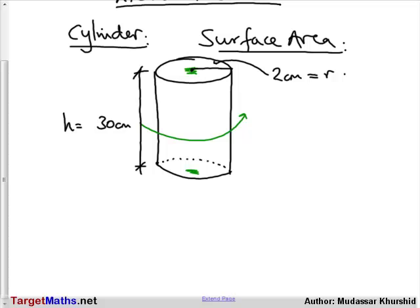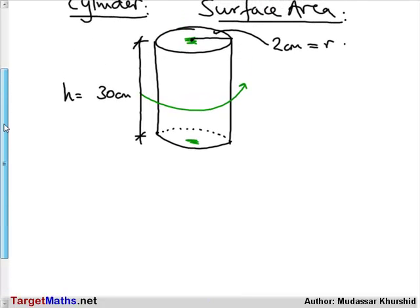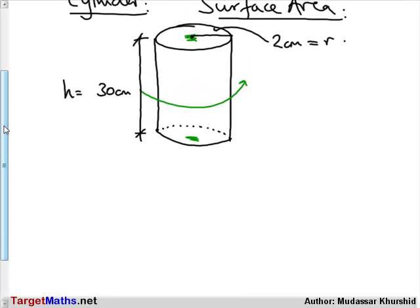Now we need to consider the surfaces on this cylinder. The best way to do this is to take apart the cylinder so that all the surfaces are looked at individually. So, if I take the top of the cylinder,